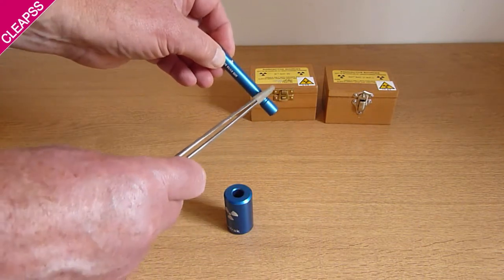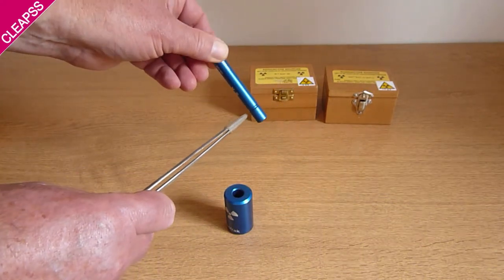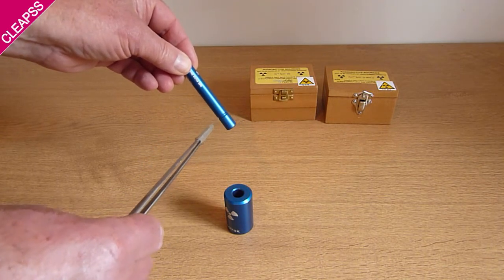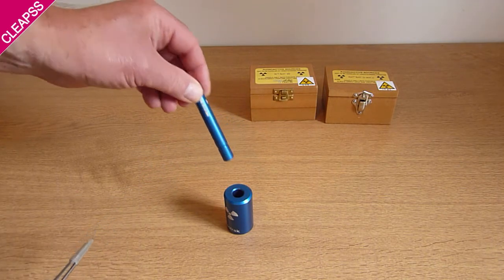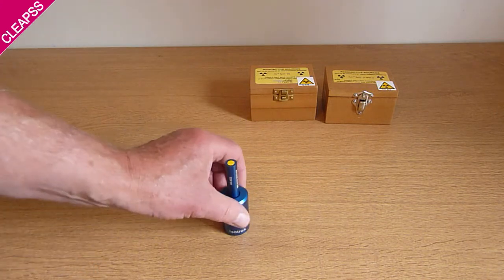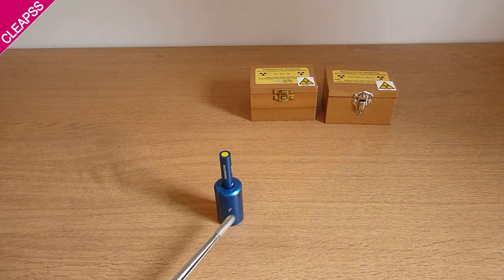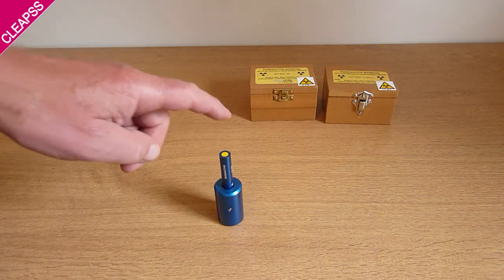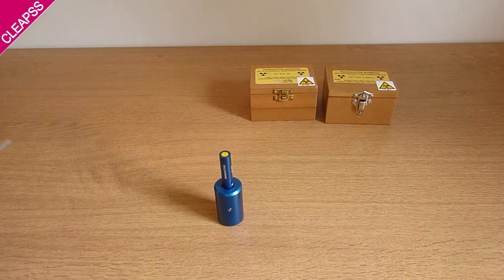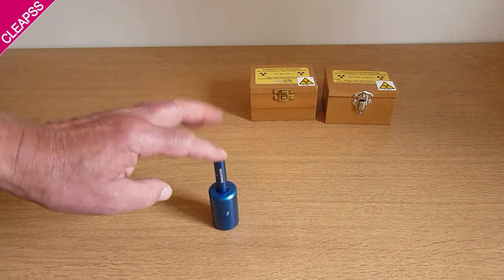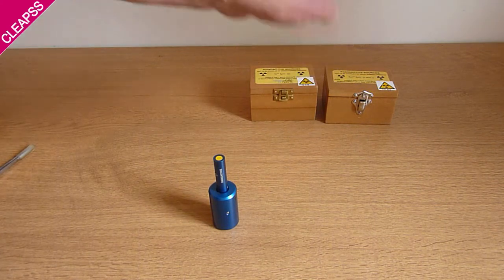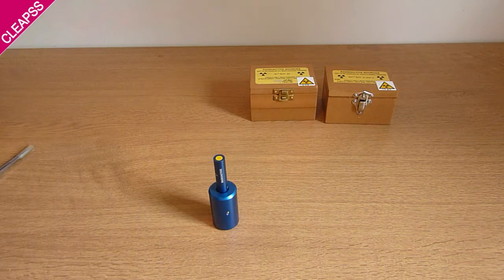The active end is indicated by the groove there. So you must make sure your hand is at the other end, well away from the active end. When you first buy these, a little screw on the back is screwed right in to lock the rod into the shield. You have to unscrew it a bit and adjust it so it clicks out and clicks in nicely. So that's the cup sources and the Isotrack source.